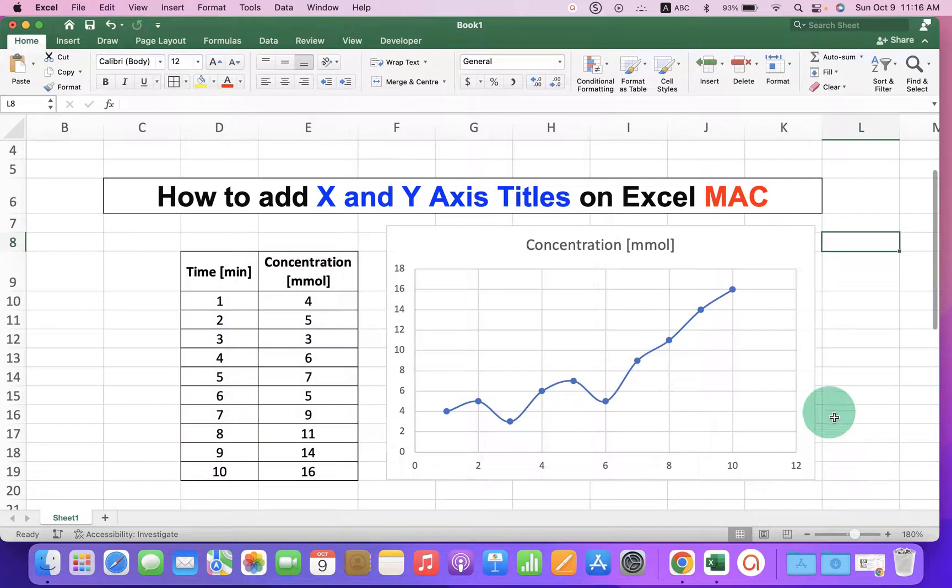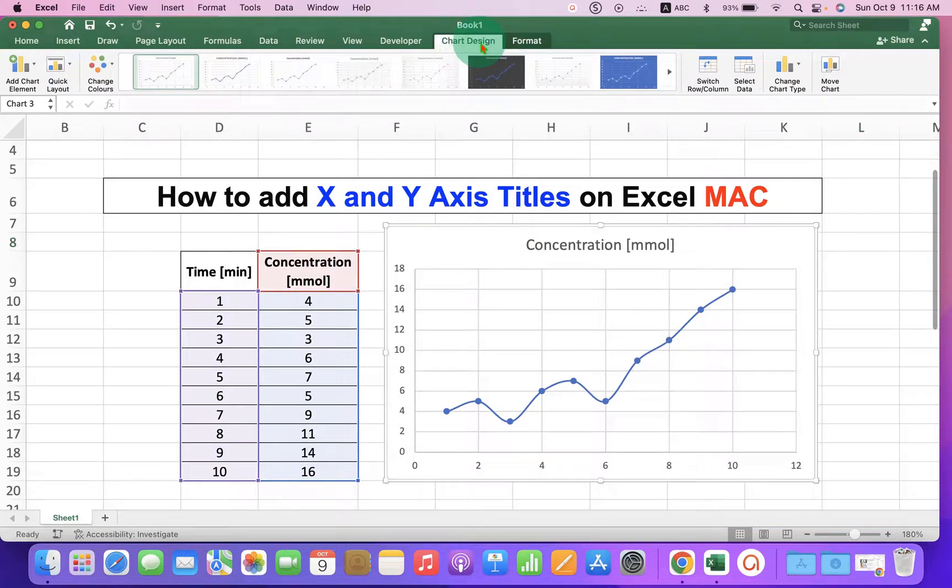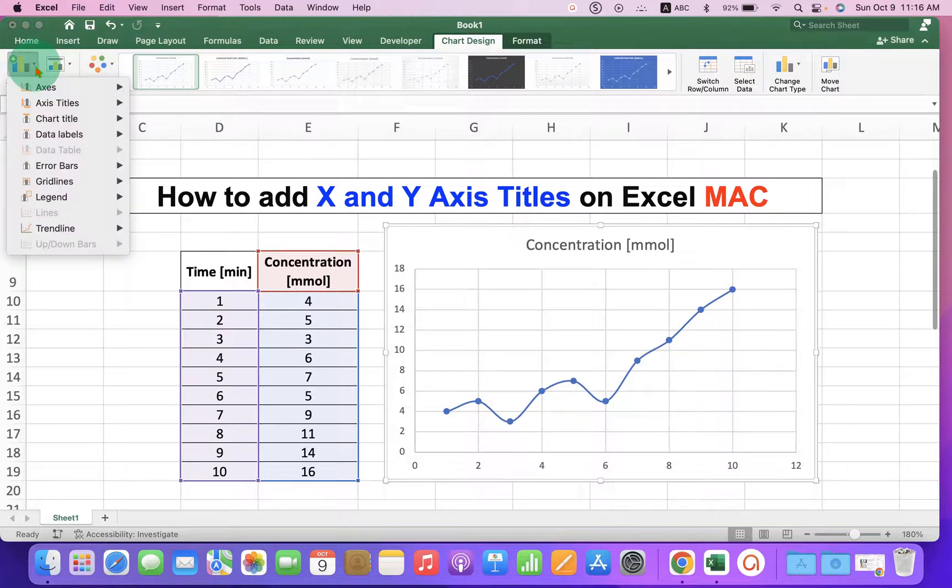So to add axis titles, just click on the graph. Under the chart design tab, here you will see the option add chart element. This option will help you to add axis titles or labels.